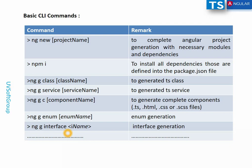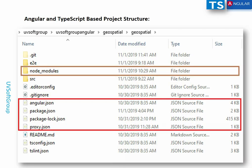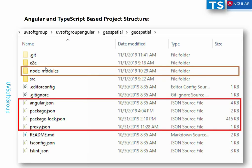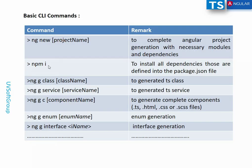This is similar to object-oriented programming in Java, C#, C++, or Python — the same concepts. These generators automatically build TypeScript files and speed up development. After creating the project with `ng new` and importing it, you can see the project structure — here is the geospatial project.